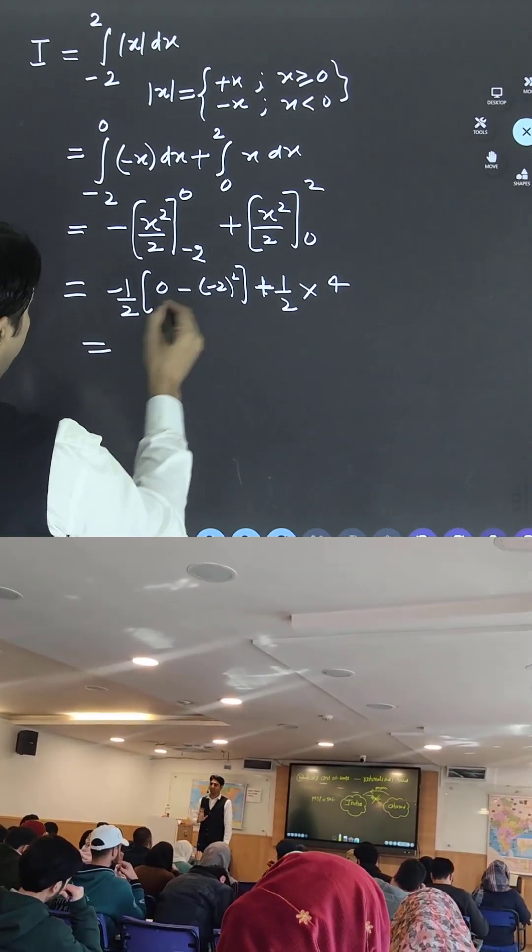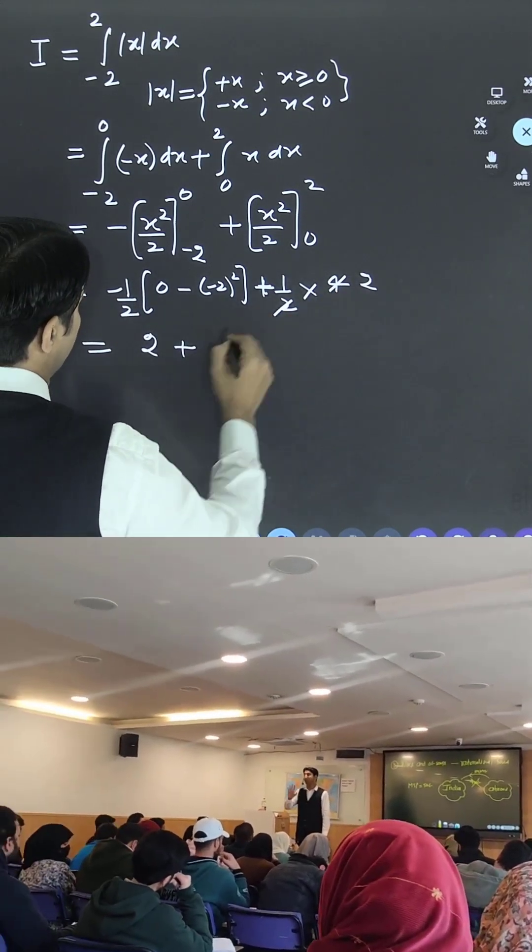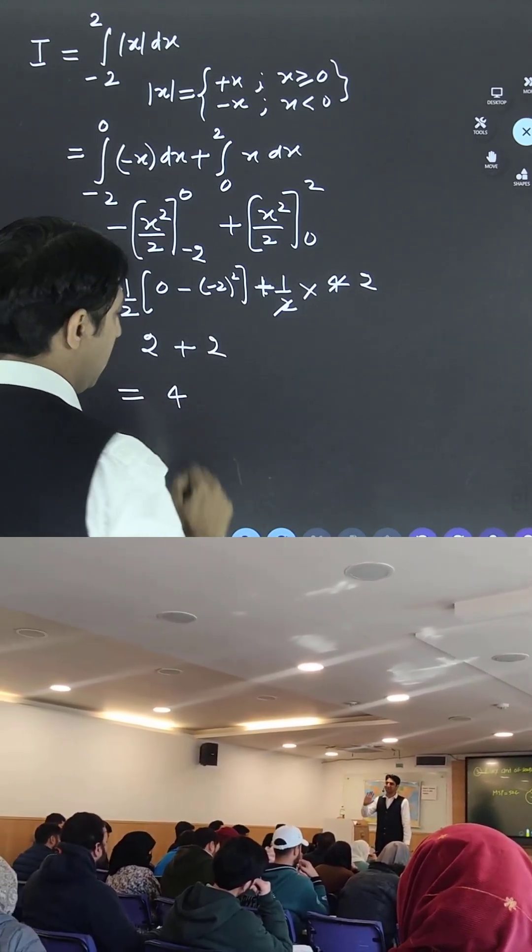Minus minus cancel out. So 4 divided by 2 is 2, plus this is 2. So 2 plus 2 is 4. This is the right answer.